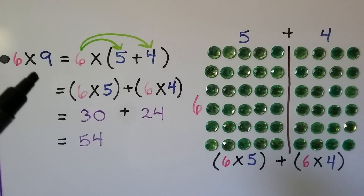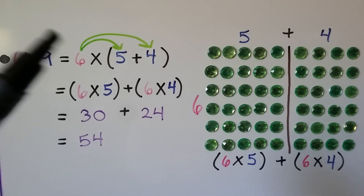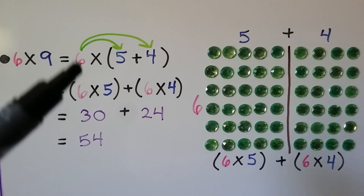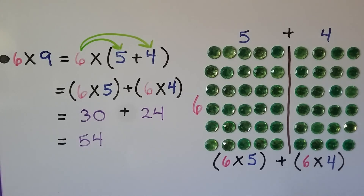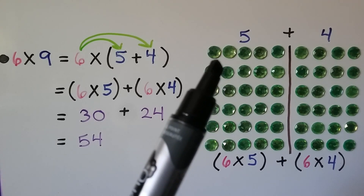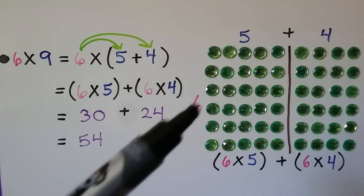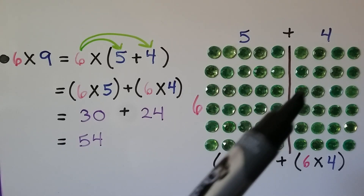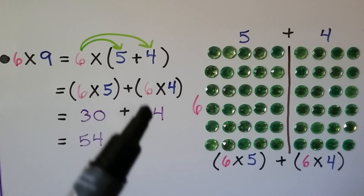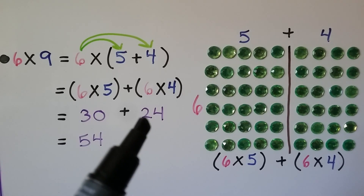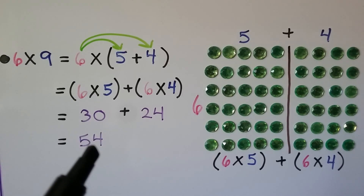For 6 times 9, we can break apart the 9 into a 5 plus 4. Then we multiply 6 times 5 plus 6 times 4. We broke the 9 into a 5 and a 4, so now we have 6 groups of 5 and 6 groups of 4. 6 times 5 is 30 and 6 times 4 is 24. We add 30 plus 24 and get 54.